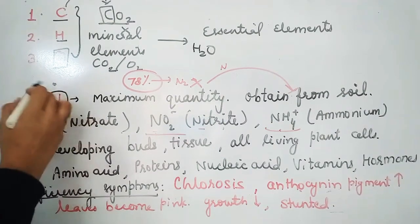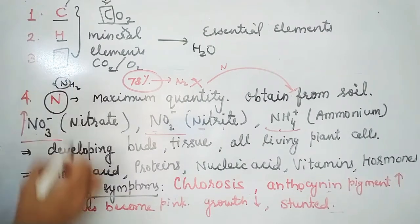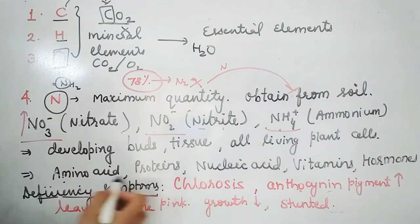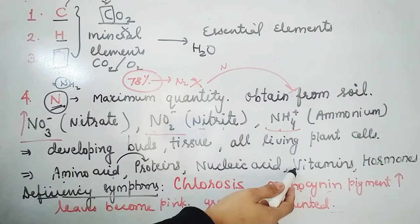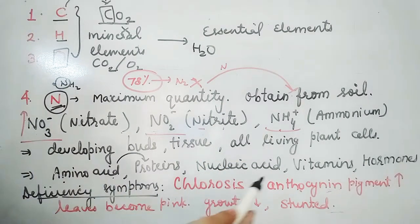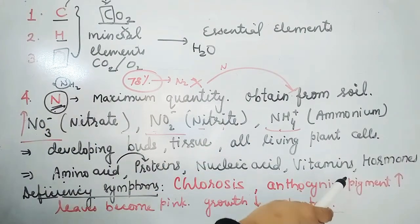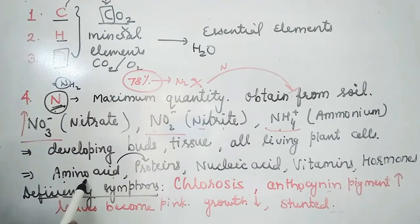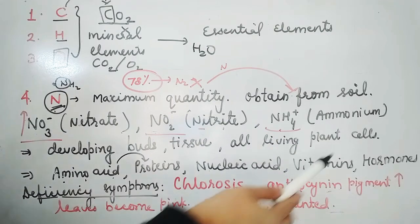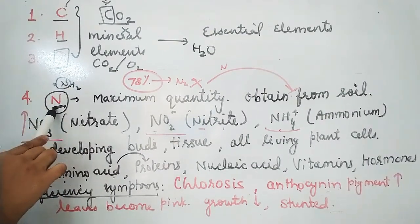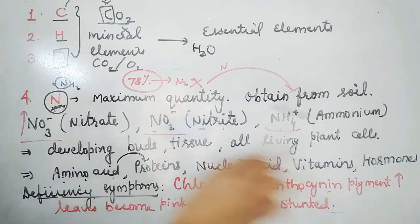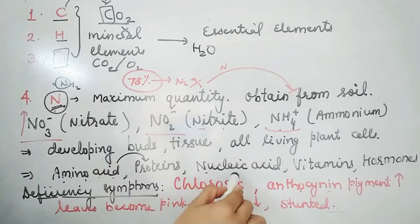Nitrogen is part of amino acids, as it forms the amino group. It is also part of proteins, nucleic acids — being the nitrogen base in purines and pyrimidines found in DNA and RNA — as well as vitamins such as nicotinamide adenine dinucleotide, and plant hormones.